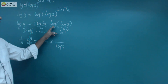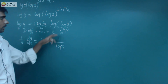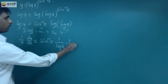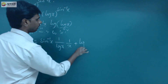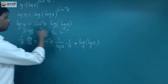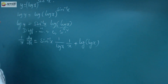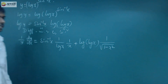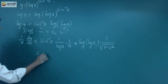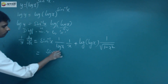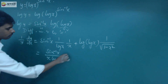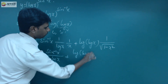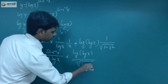So the differentiation of log of log x is 1 by (x into log x). And plus log of log x, times u differentiation: sin inverse x differentiates to 1 by square root of 1 minus x squared. So that equals sin inverse x divided by x into log x, plus log of log x divided by square root of 1 minus x squared.